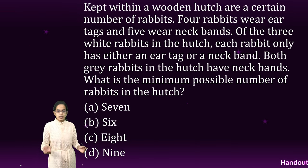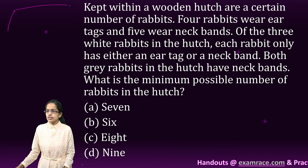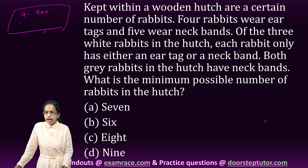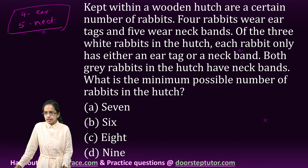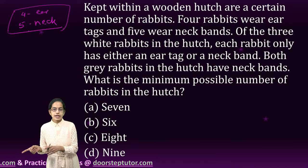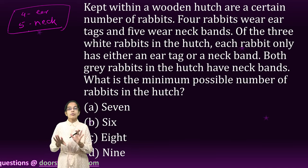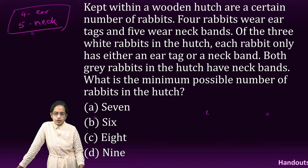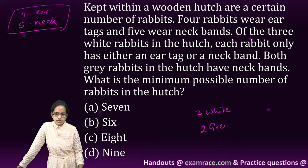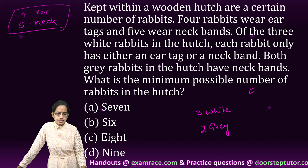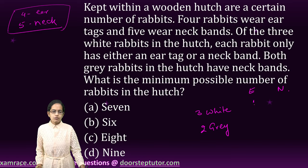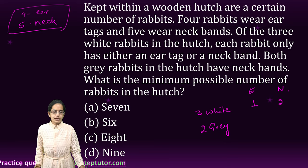The next question involves a wooden hutch with a certain number of rabbits. There are four ear tags and five neck bands. Each rabbit can be given either a neck band or an ear tag or both. The first case says there are three white rabbits and two gray rabbits. For the three white rabbits, one gets an ear tag and the remaining two get neck tags.